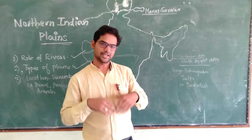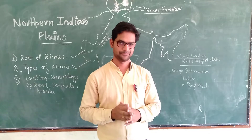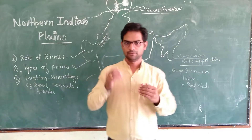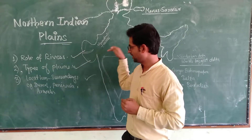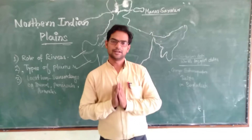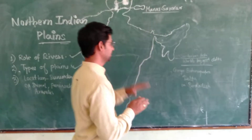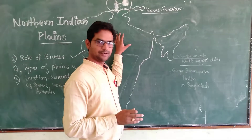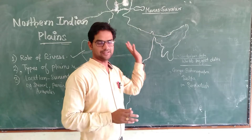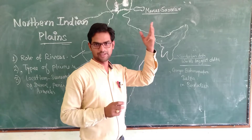Rivers can also be categorized on the basis of direction. Rivers flowing toward the east are called eastern flowing rivers, and rivers flowing toward the west are called western flowing rivers. Today we will understand Himalayan rivers, because the Northern Indian mountains are located in the north and Himalayan rivers played an important role in the formation of the Northern Indian Plains. We will study about three major Himalayan rivers.